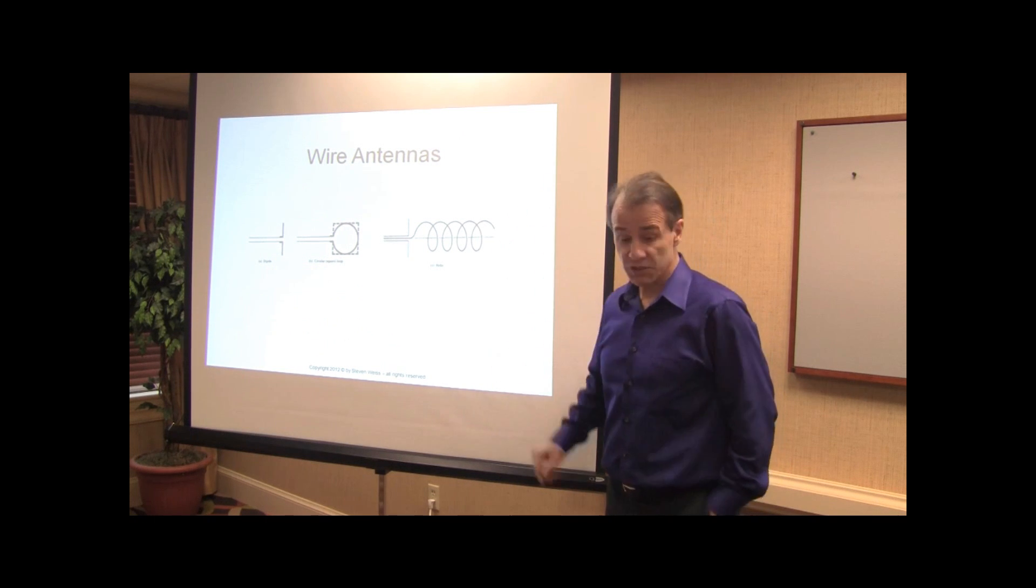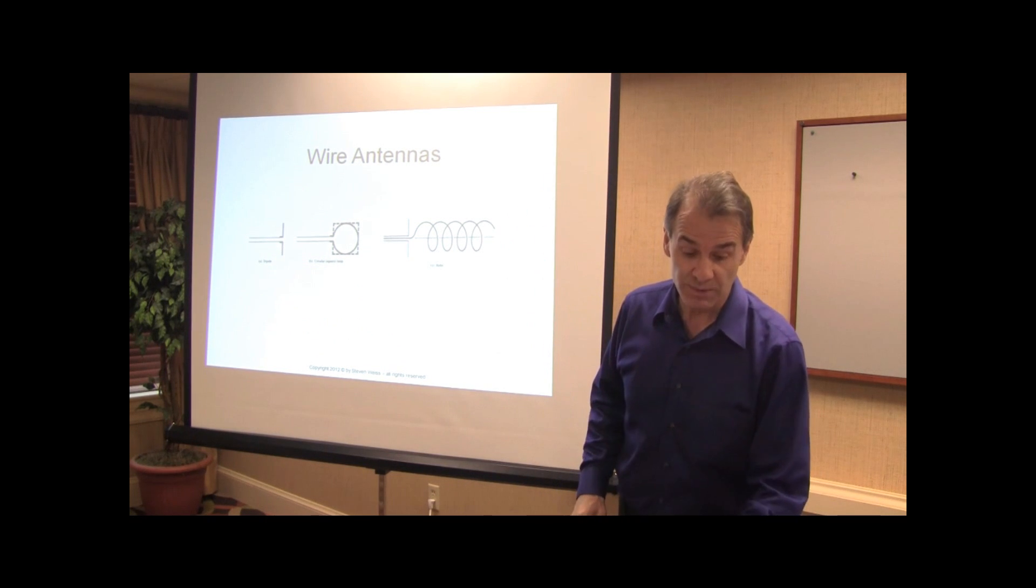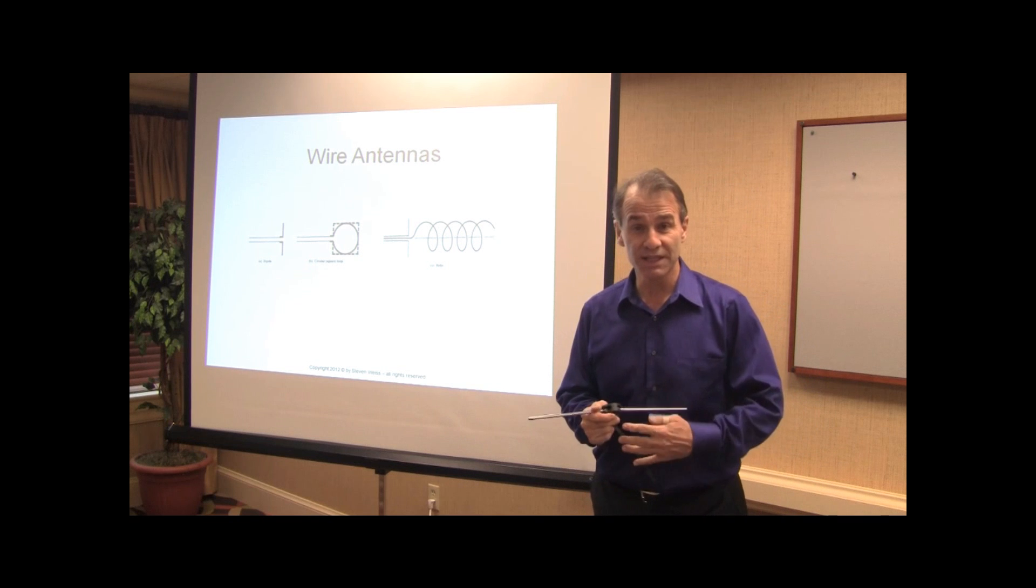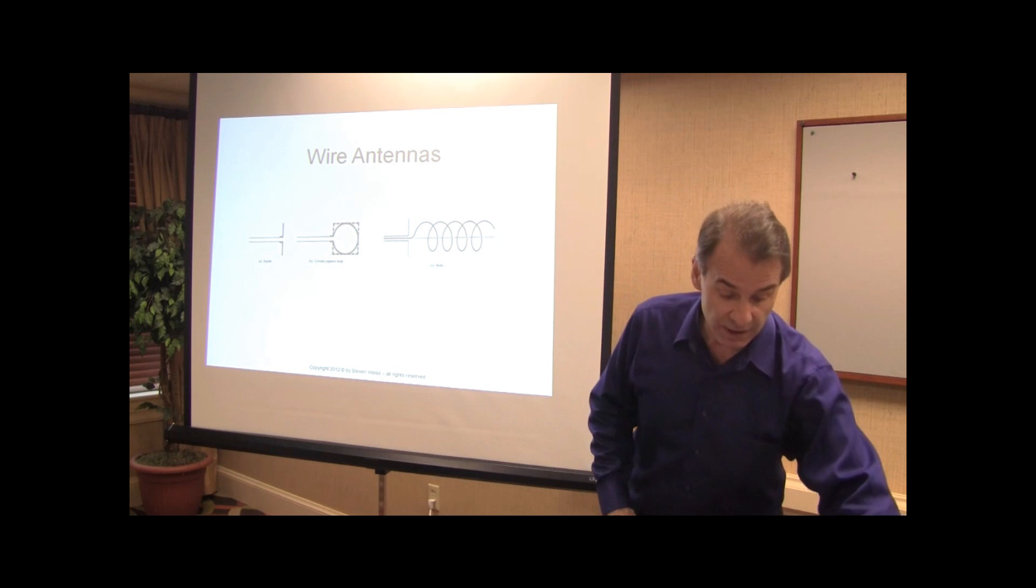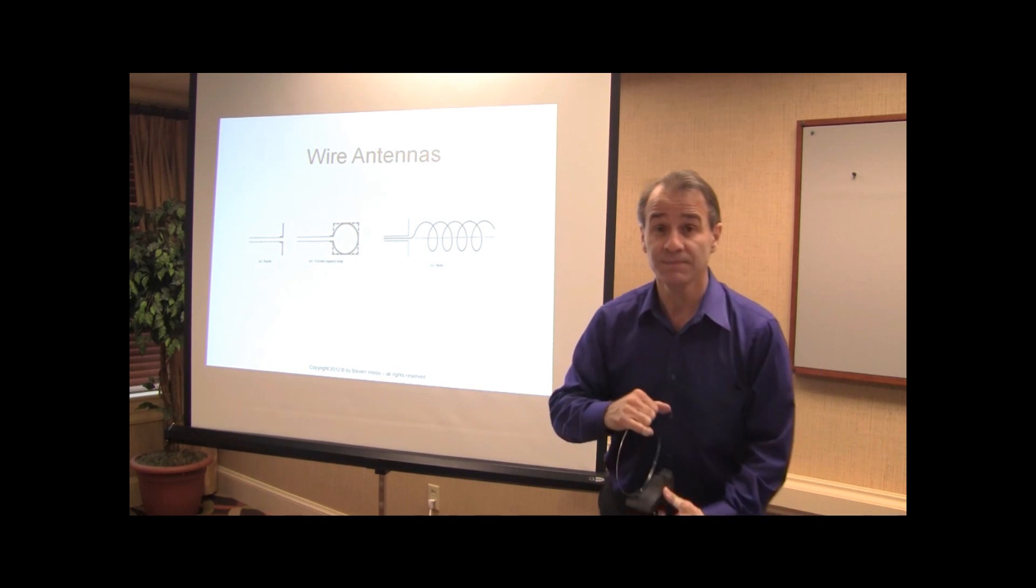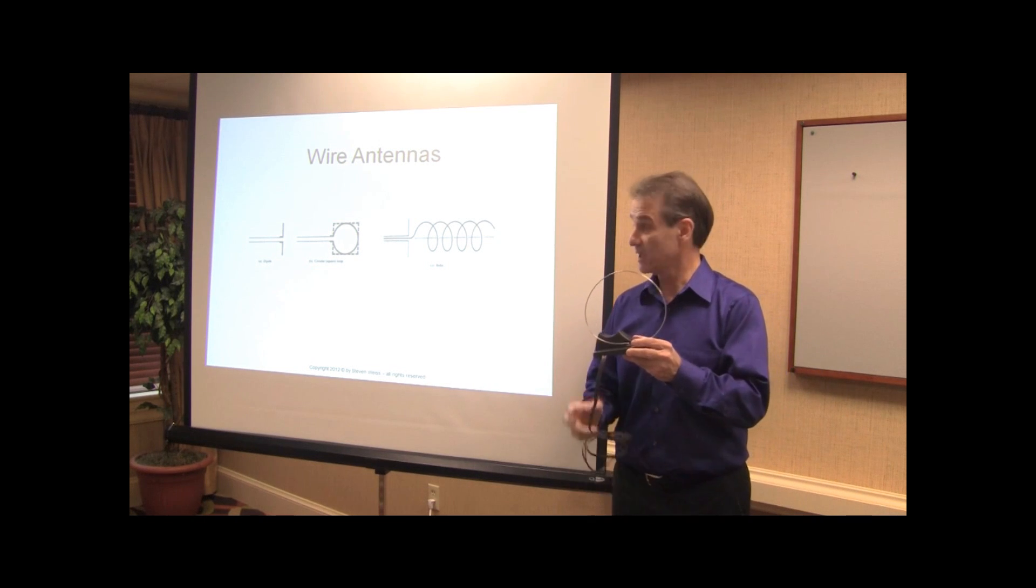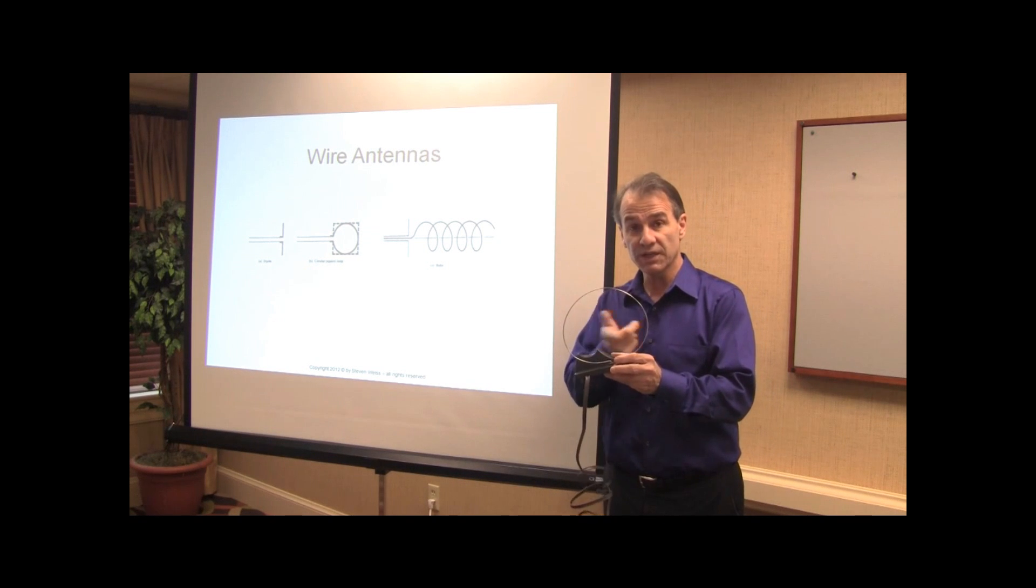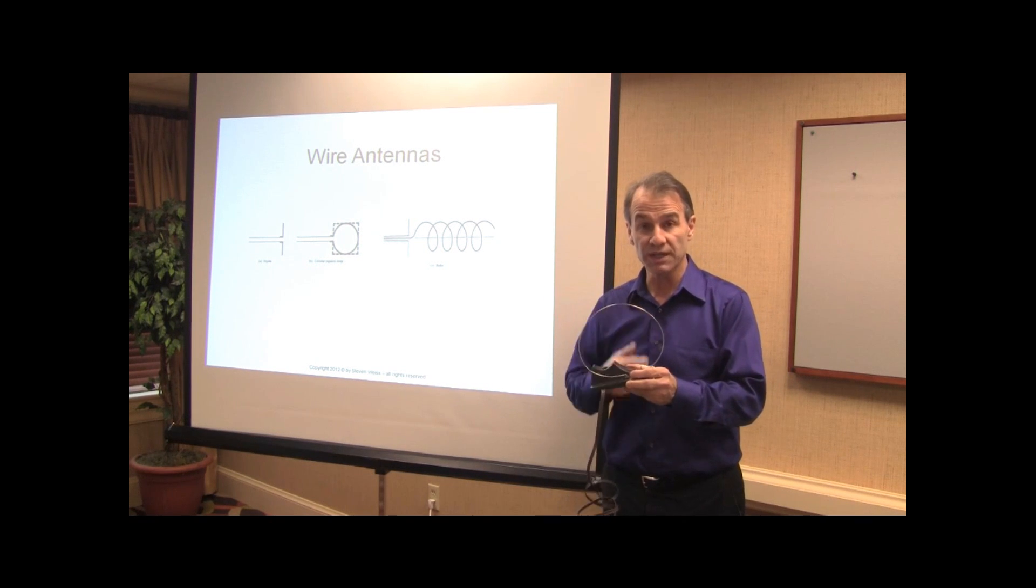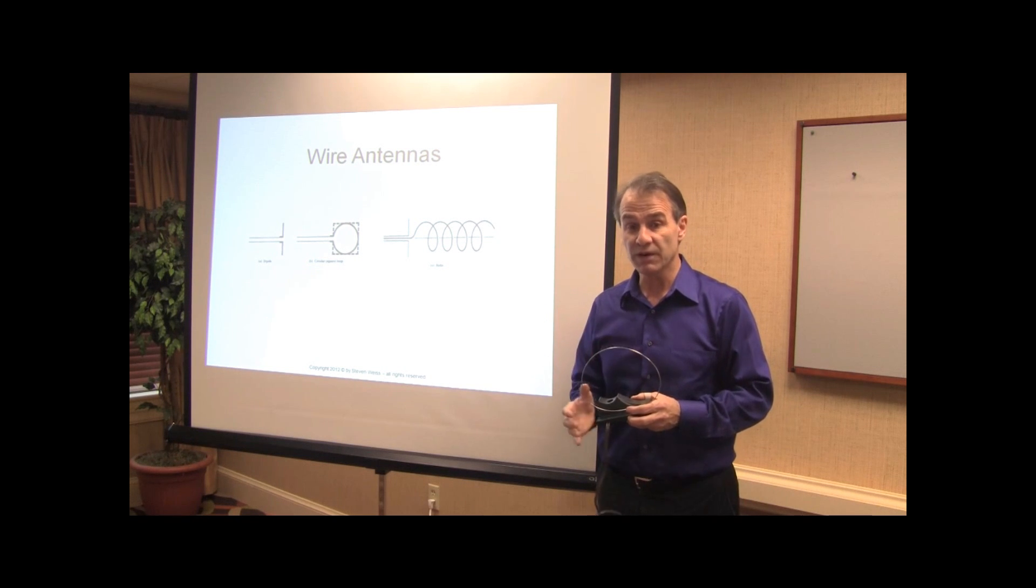So wire antennas are just what they say. For example, the classic dipole antenna that I'm holding up here is certainly a wire antenna. And additionally, we can have a loop antenna, as I'm holding up now. And so these are classic wire antennas. There's current circulating around the perimeter of the antenna or along the extent of the wire. And from that, we can ascertain what the radiated fields look like.